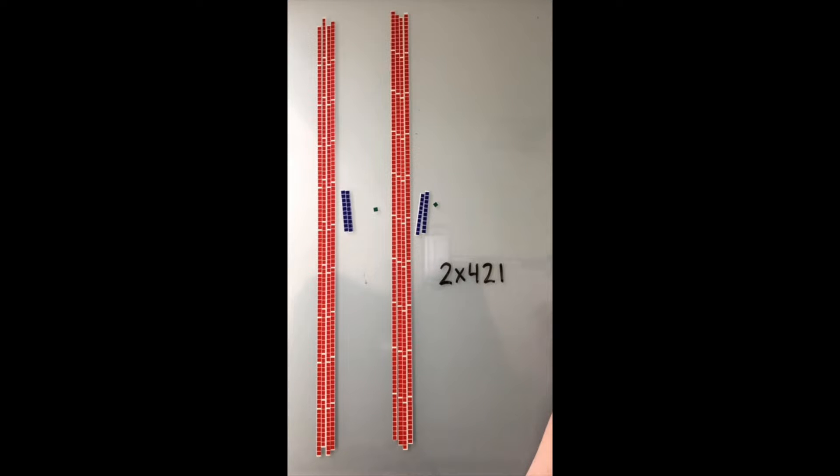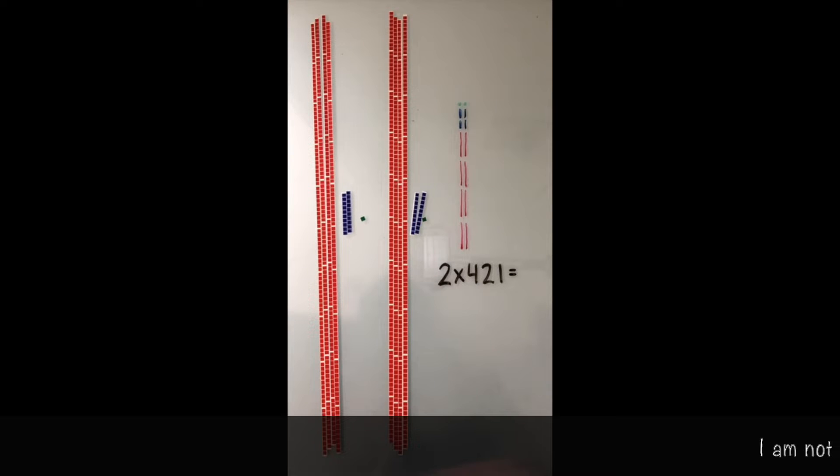First we need to get out eight hundreds, four blue tens, and two green units. You'll notice that I've split these up into two groups. The first group will be our first column and the second group will be our second column. The first group will be one across and 421 up. The second group will be one across and 421 up.